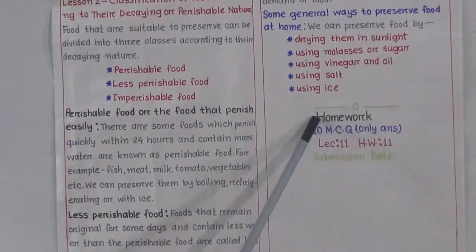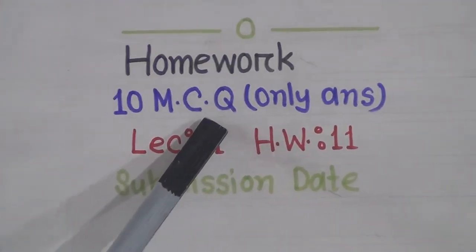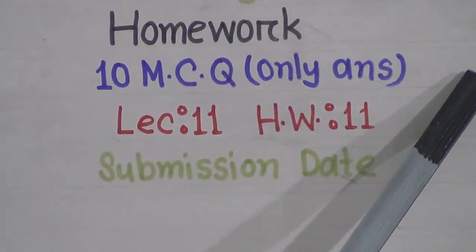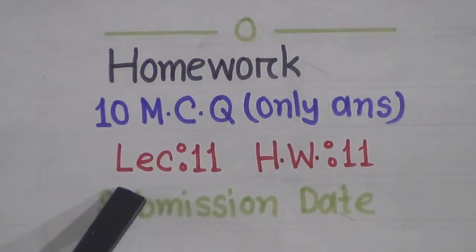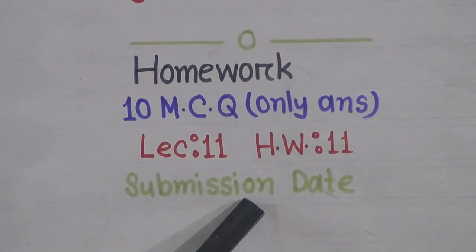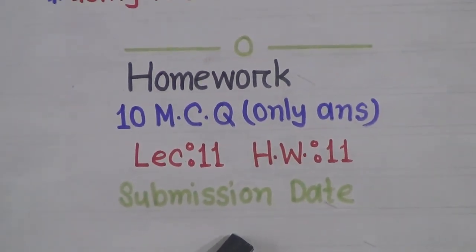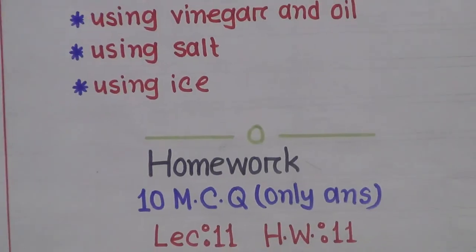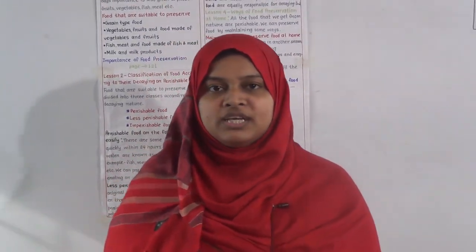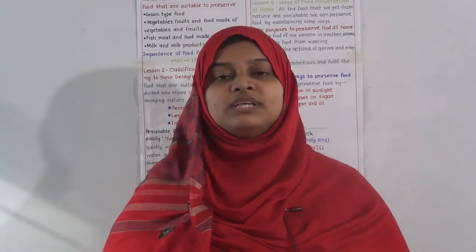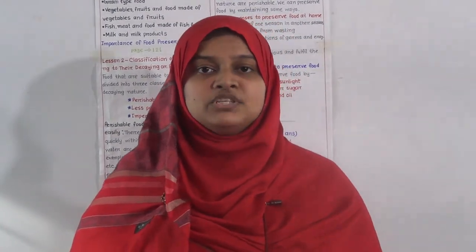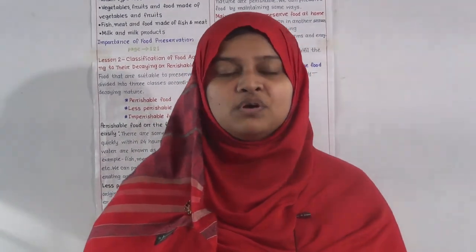I have given you homework: do 10 MCQs from chapter 11, write only the question and answer — no need to make options. Don't forget to write the lecture number and homework number, which are both 11, with the submission date of Sunday. Do your homework in your SW copy; you will get CT diary and SBA marks based on submission. Guardians can submit copies every Sunday and collect previous copies the following Sunday. Keep practicing at home, abide by your parents, stay well — Assalamu alaikum.